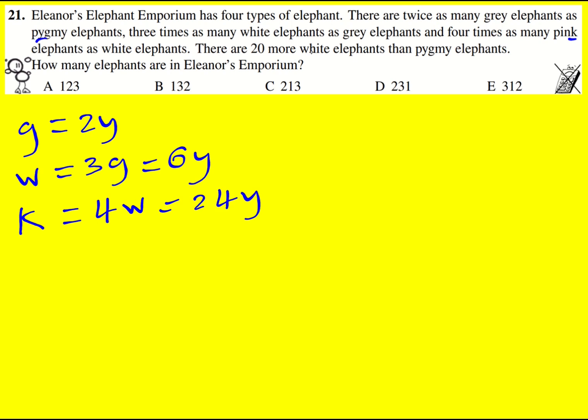And finally, there are 20 more white elephants than pygmy elephants. Okay, so that means that W is equal to Y plus 20. Ah, but the thing is, we already have that W is 6Y, so I can now construct an equation from that. So it must be that 5Y equals 20 and Y is equal to 4.